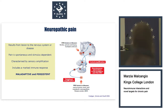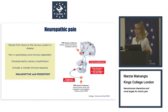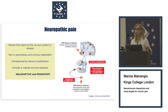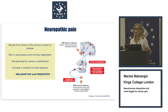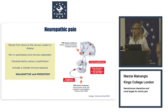For example, a peripheral nerve trauma or chemotherapy treatment are associated with neuropathic pain. Pain is spontaneous, stimulus-dependent, and characterized by amplification — two phenomena: peripheral and central sensitization. There is also a marked immune response associated with neuropathic pain, which is the focus of my research. Neuropathic pain is maladaptive and can be extremely persistent for many years in patients.